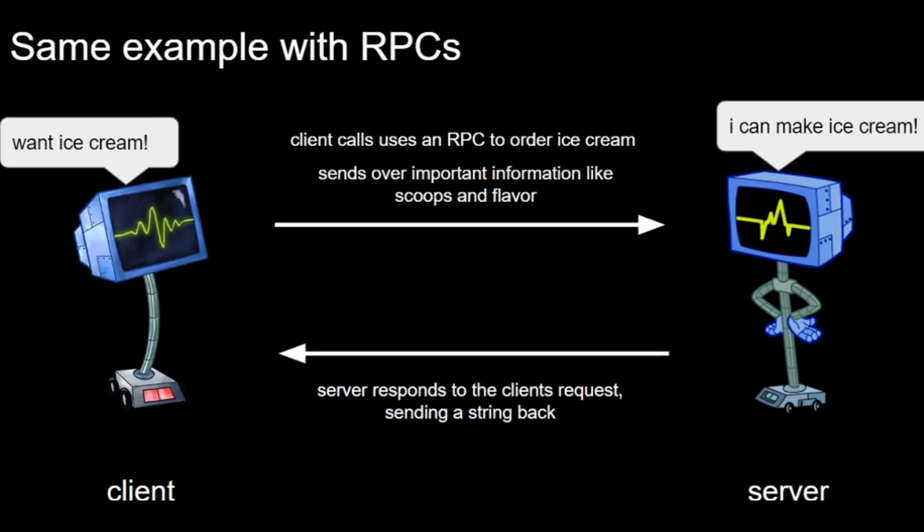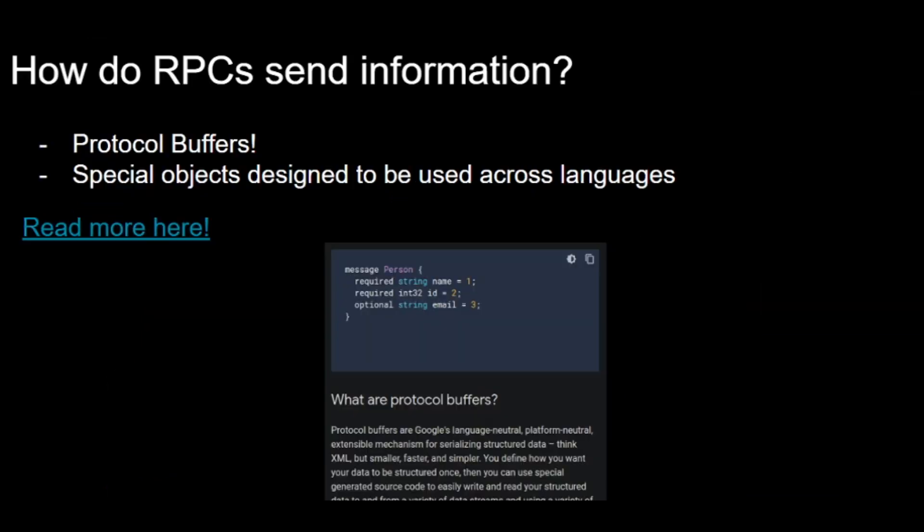One question you might have is: how do RPCs send information between the client and the server? The answer is protocol buffers. Protocol buffers are developed by Google, and simply put, they're just special objects that are designed to be used across languages — so Python can interpret them, JavaScript can interpret them, and we can use them if these two computers are using different languages.